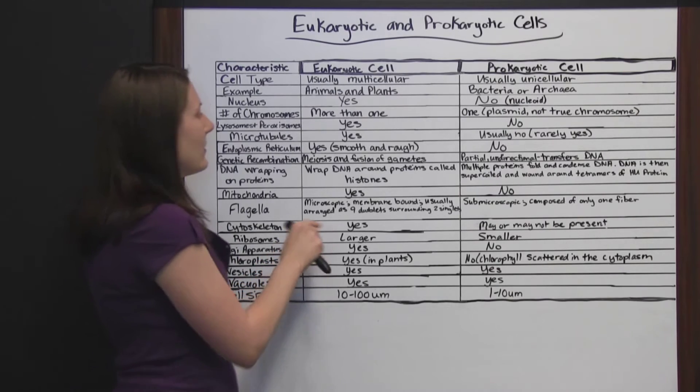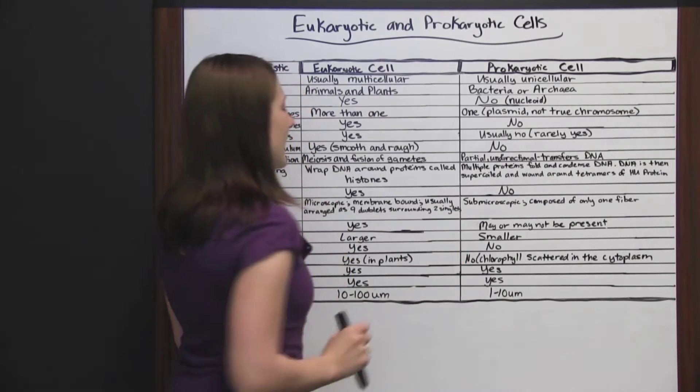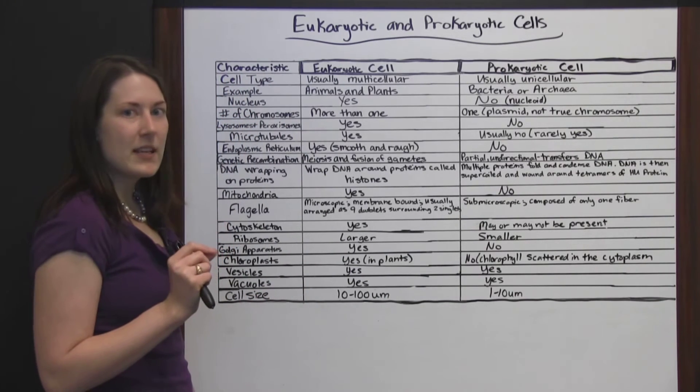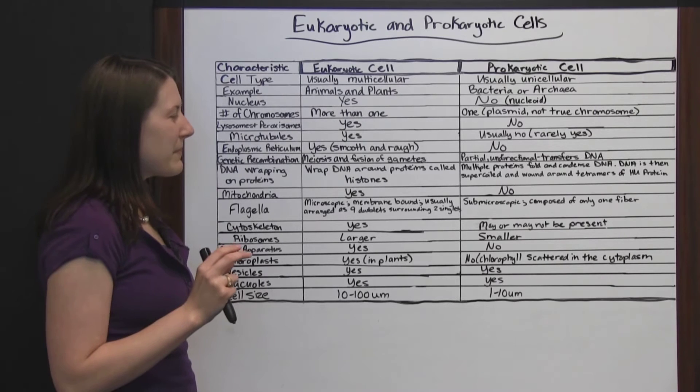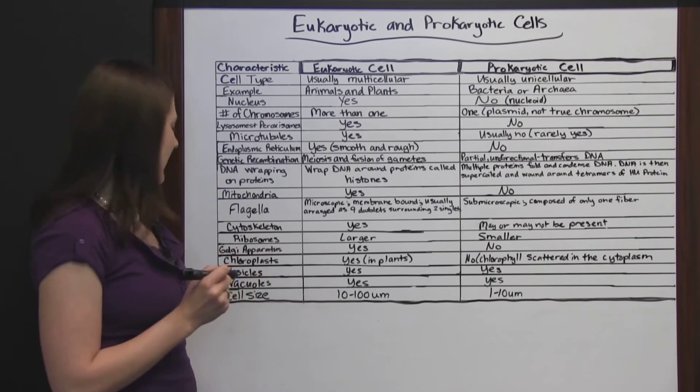Cytoskeleton. Yes, the eukaryotic cell has a defined cytoskeleton. With prokaryotic cells, it may or may not be present. You may have some little bits that give it a skeletal shape, but usually there's not much cytoskeleton in a prokaryotic cell.